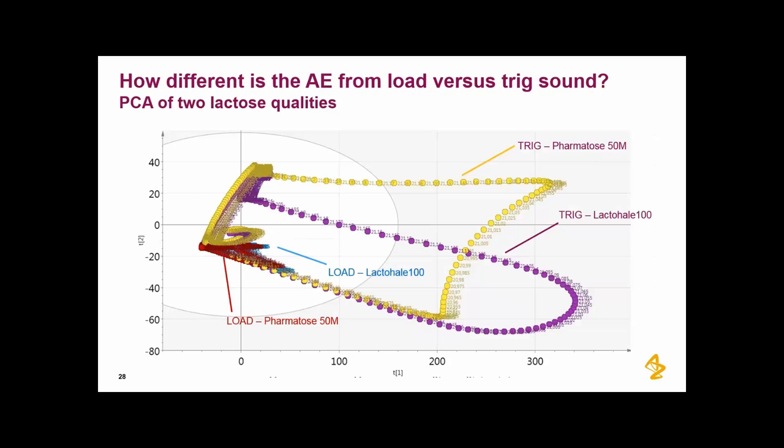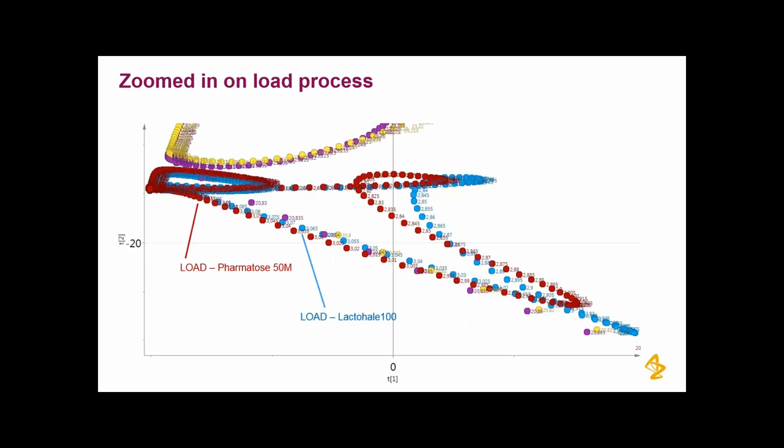If we look at this PCA plot again, and if we look at the two different sound events that we are trying to characterize, the load and the trig, in this particular experiment we have two different lactoses again. And you can see that the PCA trace or the sound process is much more dynamic and it gives a bigger effect in this particular plot for the trig sound, whereas the load sound in this respect is smaller. So if we go and zoom in on the load we see also there, and actually it's the blue and the red trace for the different lactoses. You can actually see that also here in the load signal you see differences between these two load units' operation.